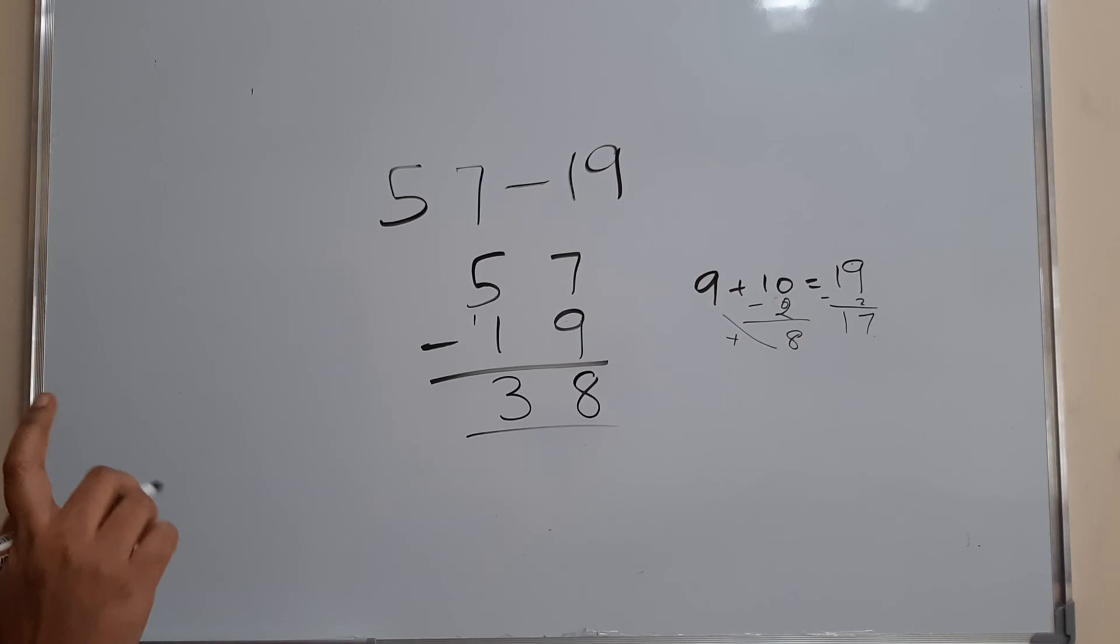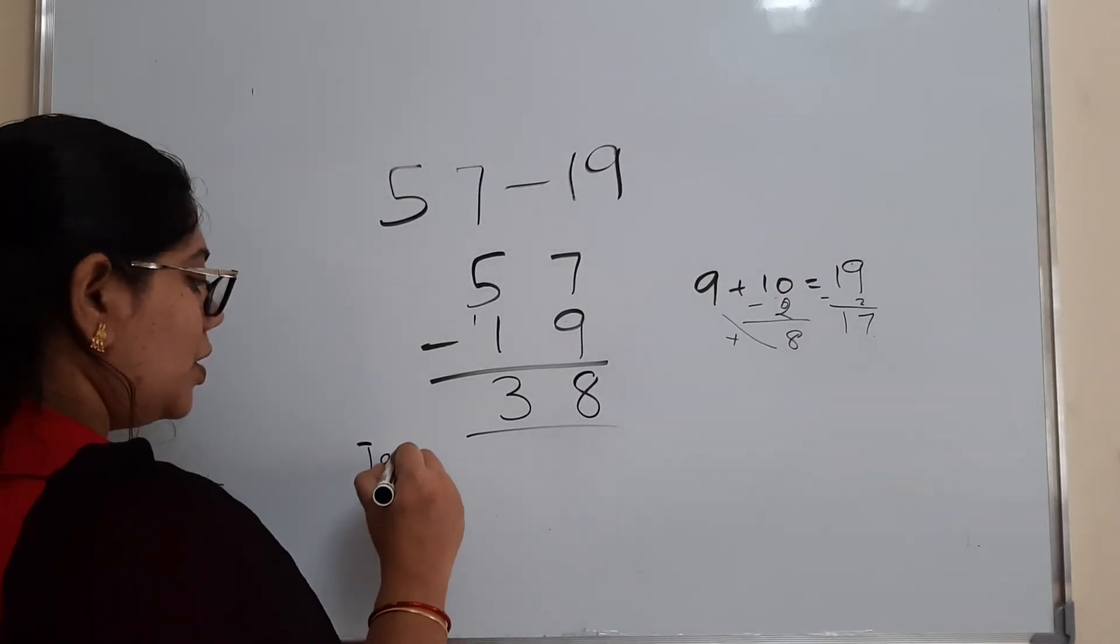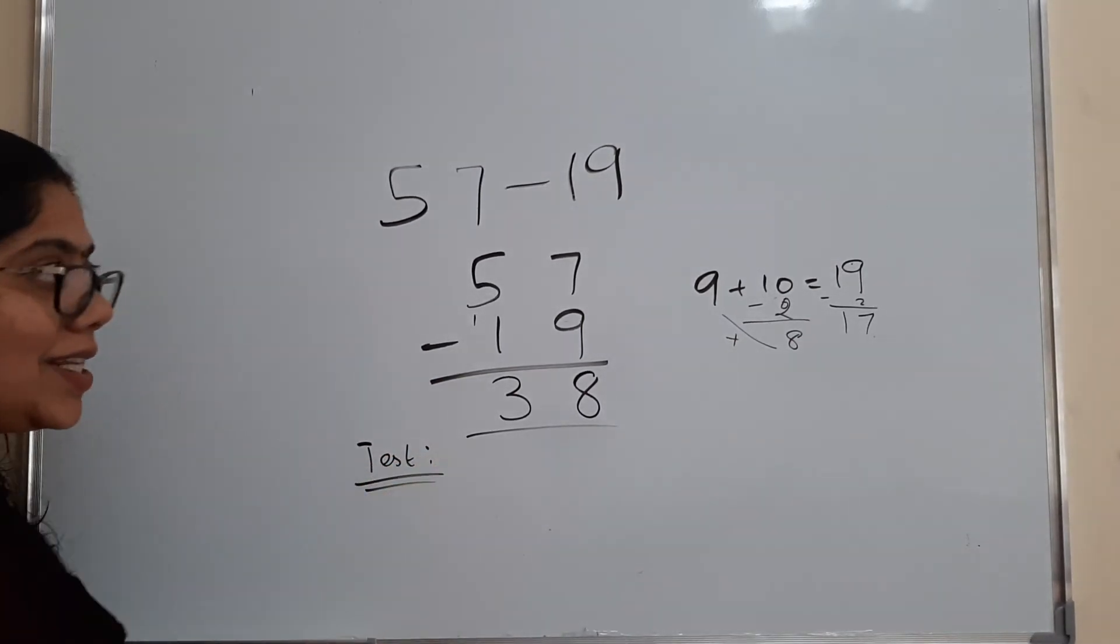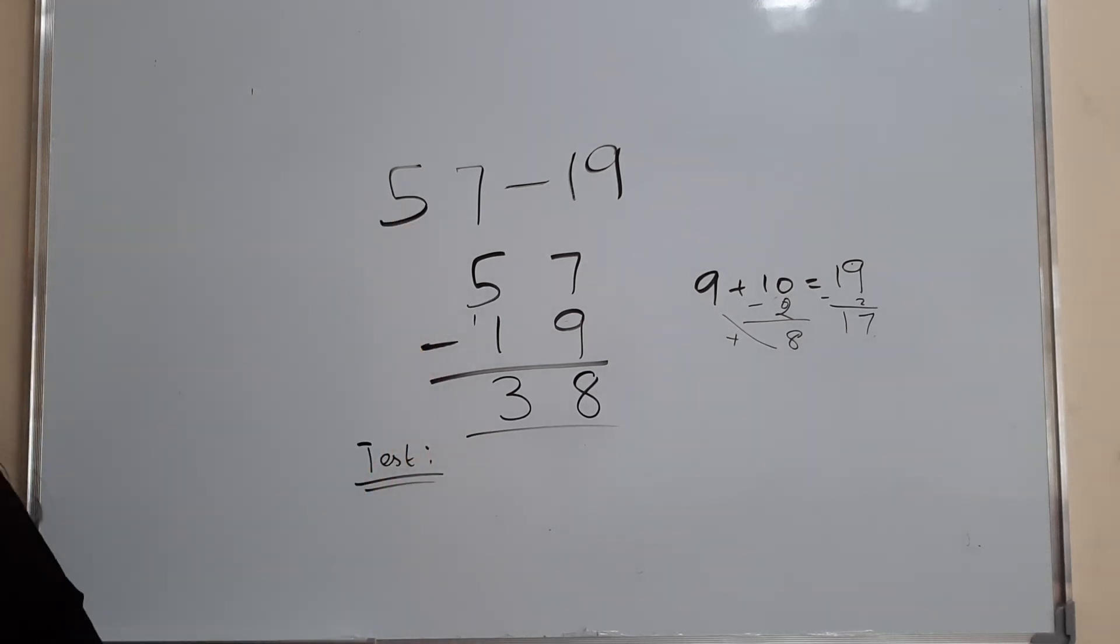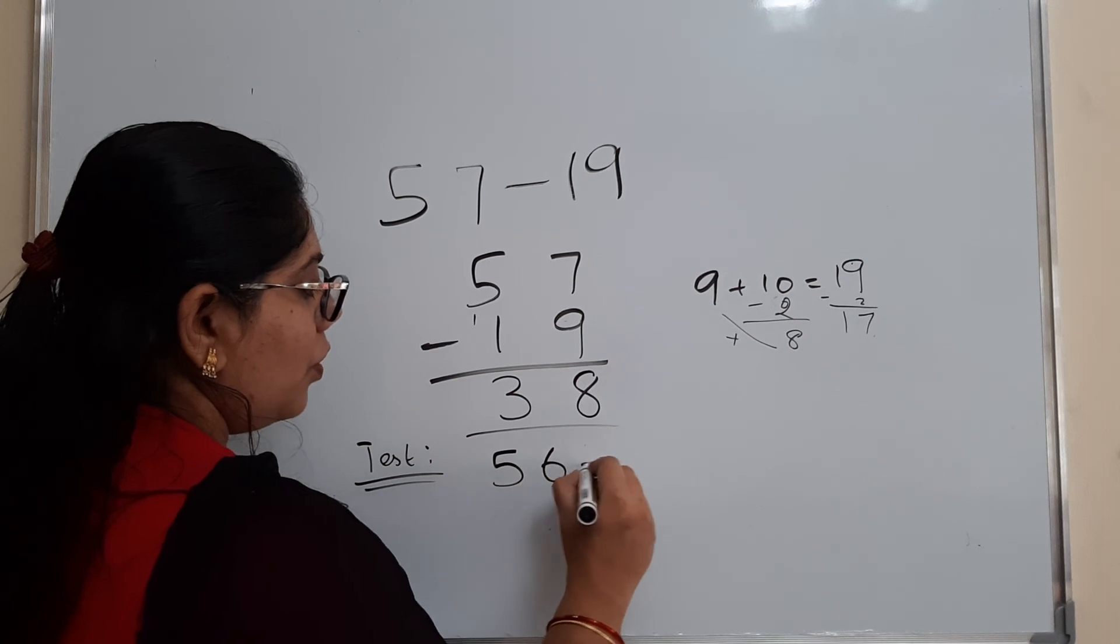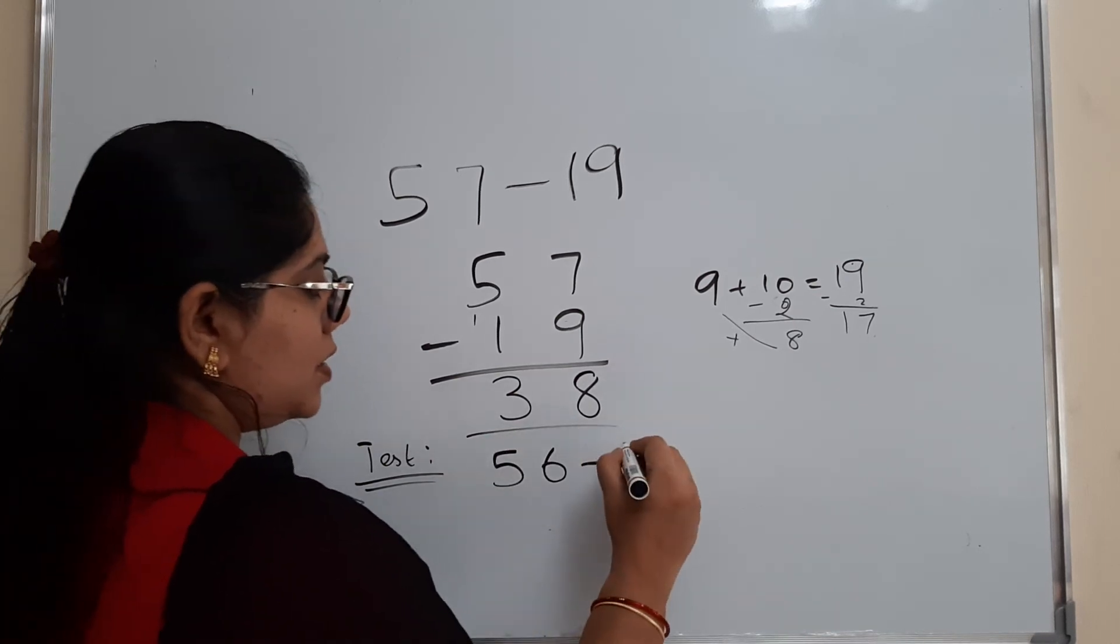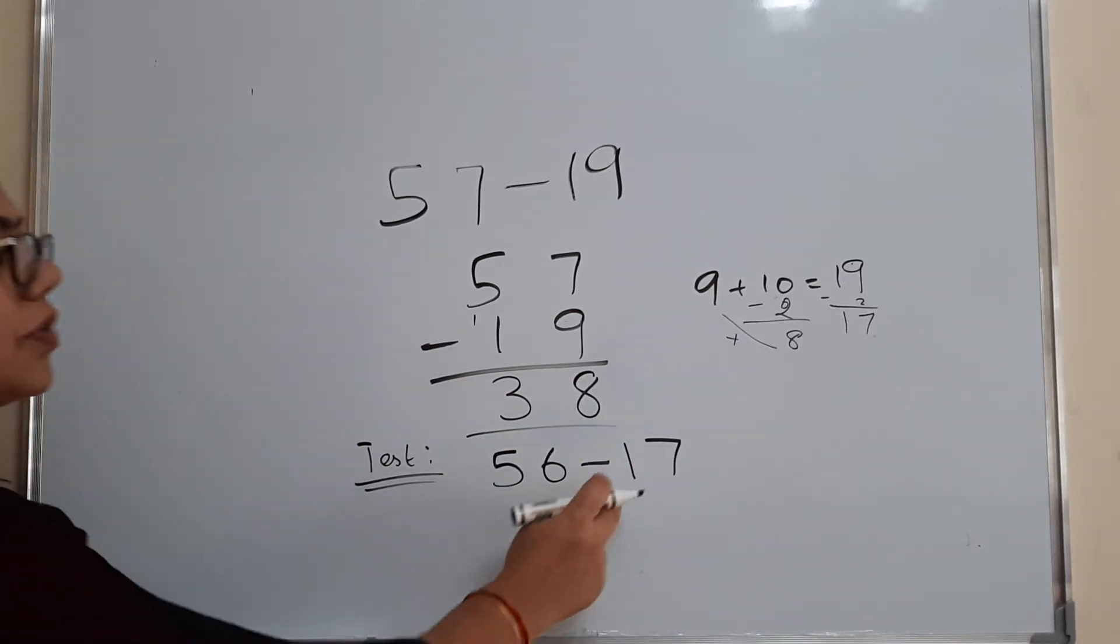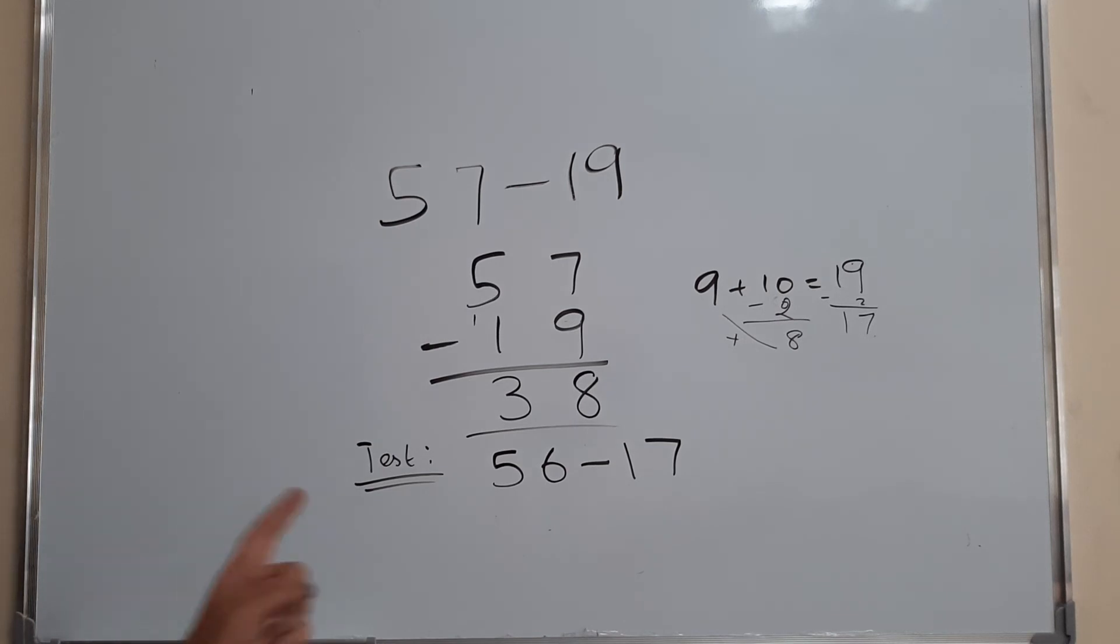And this is for you. Please do this and write the answer using this type of subtraction and tell how it's easy for you, or how you felt. You please tell in the comments. 56 minus 17. Do in this method and tell how you are able to do or need more explanation. Thank you.